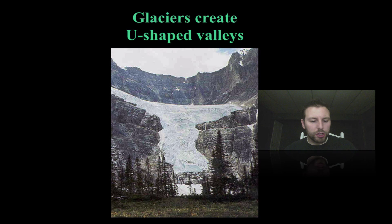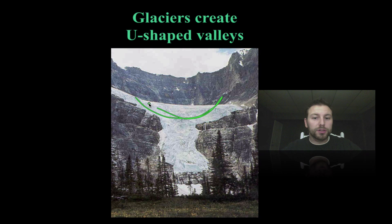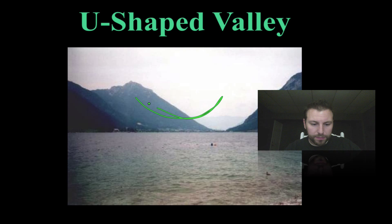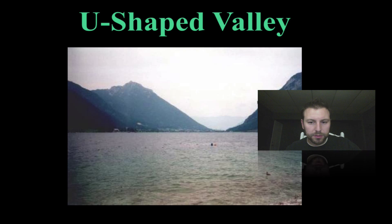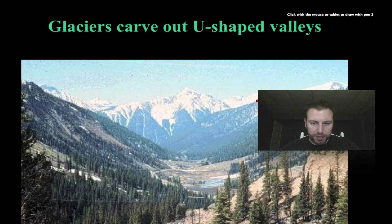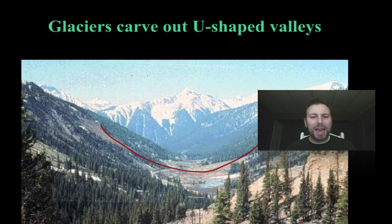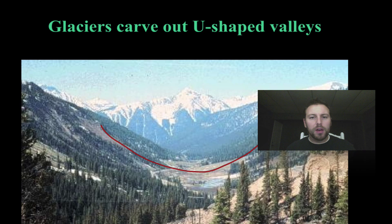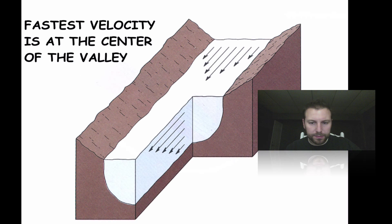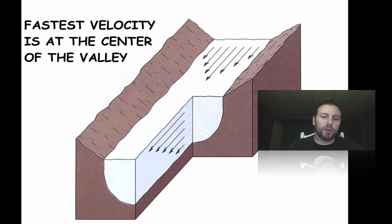Glaciers also create U-shaped valleys, as opposed to rivers which create V-shaped valleys. Here are examples of U-shaped valleys formed by glaciers. Remember, glaciers are massive — a mile or two thick of ice — so when they move through a valley they grab and pull everything with them, forming these massive U-shaped valleys. The fastest movement is at the center of the glacier, very similar to rivers where flow is fastest near the center.